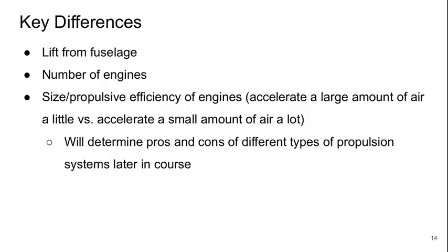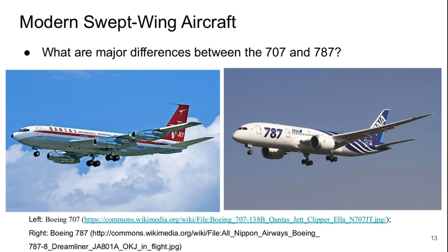A second key difference is the number of engines. The 707 had four engines while the 787 has only two. A reducing number of engines is a trend in modern aircraft — there was also a period when three-engine aircraft were popular. The biggest reason for this change is the increase in engine reliability. Aircraft need to be able to fly if they lose one engine in flight, and fly a certain distance under those conditions to safely reach another airport. Previously, more engines were needed to ensure sufficient reliability and power, whereas large modern engines can fly the aircraft on just one of them for some period of time.